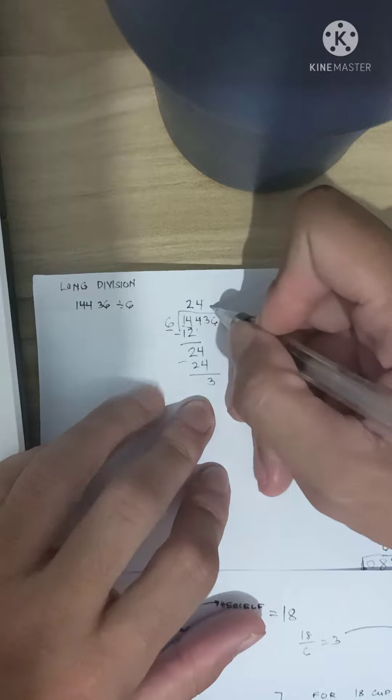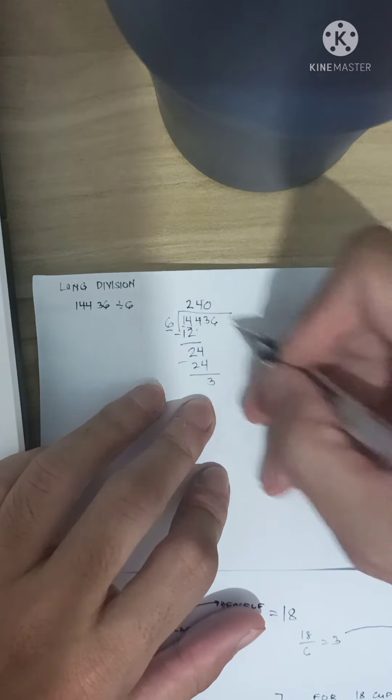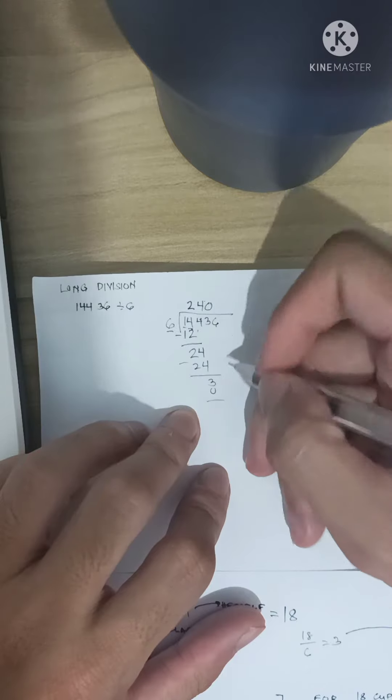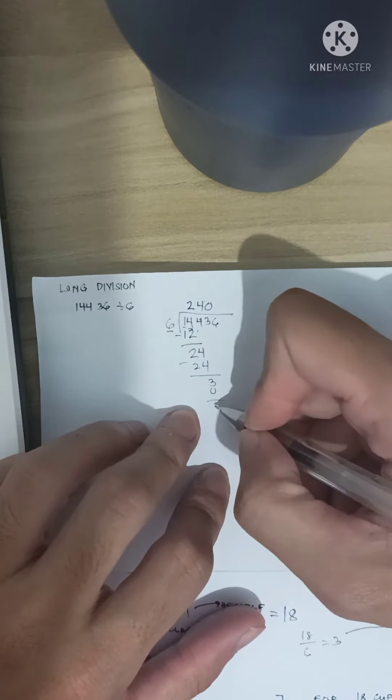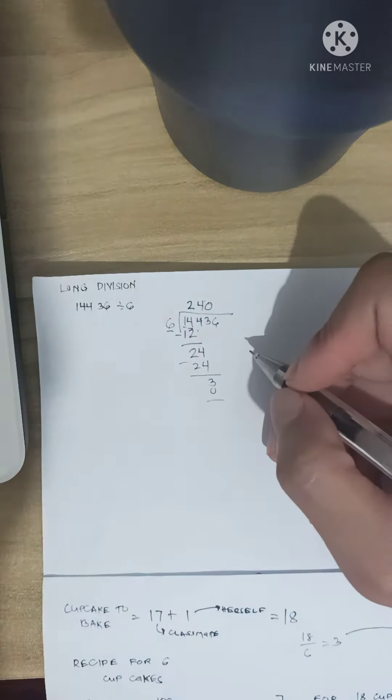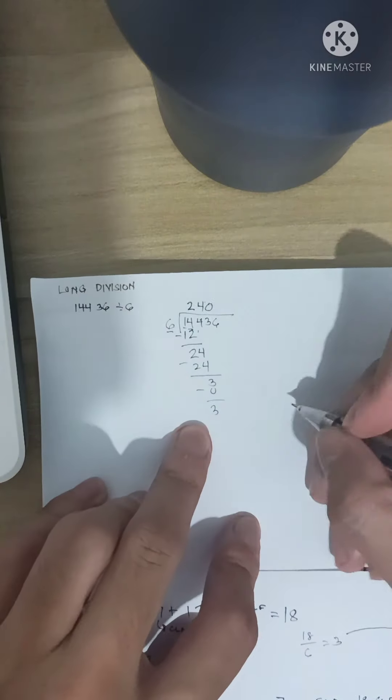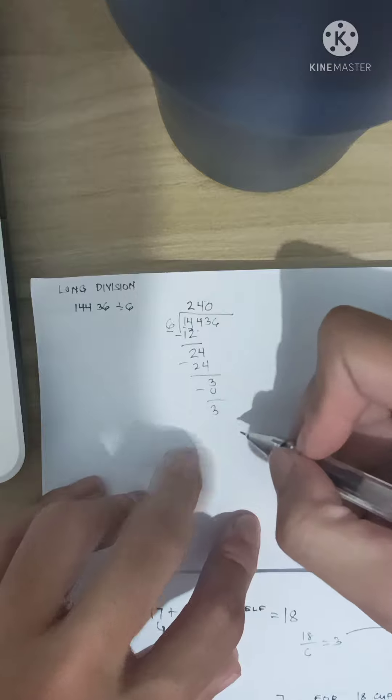So, 0. 0 times 6, 0. And then, 3. We subtract. 3 minus 0 is 3.